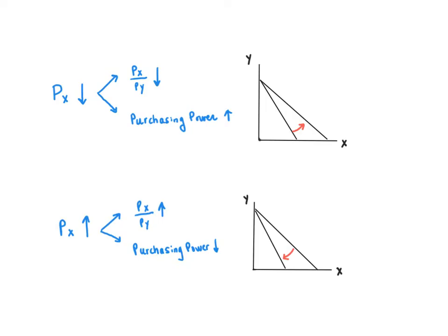We've seen how changing the price of a good, like changing the price of X, either lowering it or increasing it, will cause the budget line to rotate. When the price of X goes down, the budget line rotates out, and when the price of X goes up, the budget line rotates in.